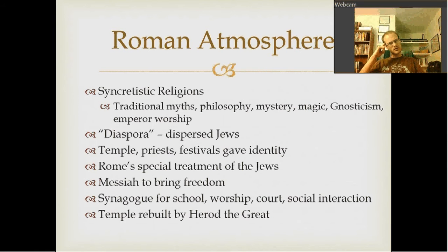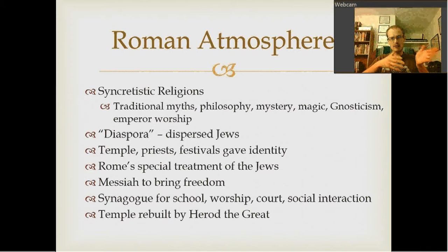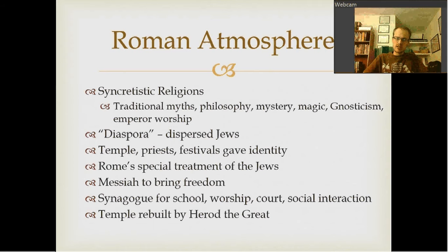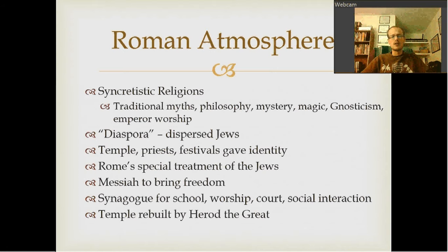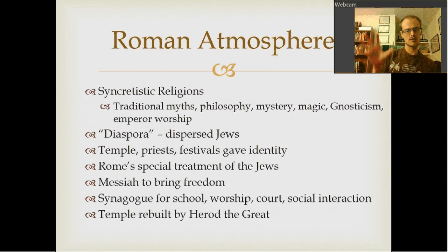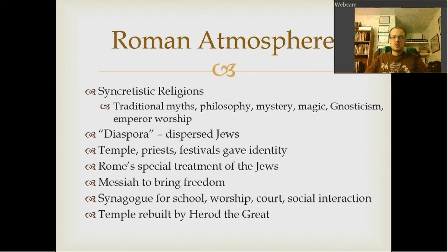Gnosticism really didn't get into the church much until the late 100s to 200s AD, though it could have been a factor early on. Most people think John was writing in his epistles to combat early Gnostic thought in the church. As Rome took over, they kept the Greek cultural framework, which served them very well. As the church grew, there came a split between East and West — the West speaking Latin, the East speaking Greek — a factor that continued through the church fathers and onward.